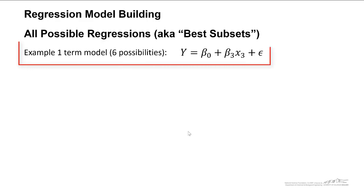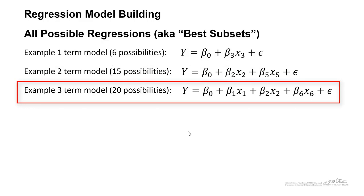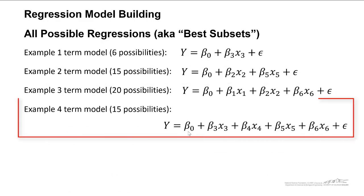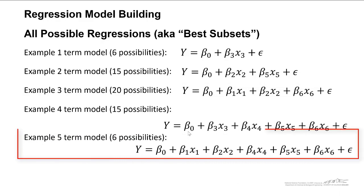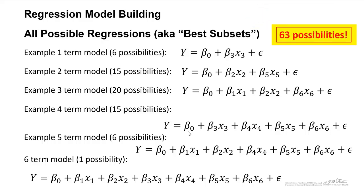For example, we have a one-term model. There's six possibilities. For example, we could have 15 two-term models. We could have 20 three-term models. We could have 15 four-term models, six five-term models, and only one model that has all six terms. And so together, this represents 63 different possibilities. When you run the best subsets in a software tool like Minitab, it's going to go through all of these different combinations, and it's going to screen for the best or the couple of best regression models for your data.